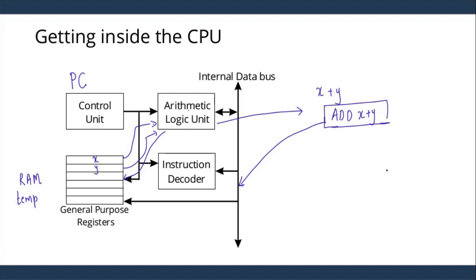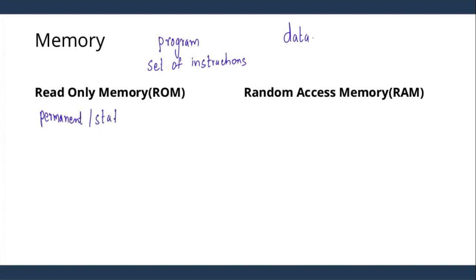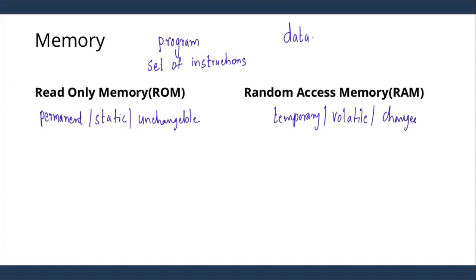When we look at the instruction in more detail in a microcontroller CPU — memory is required for two purposes: for storing the program, which is a set of instructions, and then data. These are the two kinds of requirements for memory. We have read-only memory and random access memory. Read-only memory is used for permanent or static, unchangeable data, while random access memory is used for temporary, volatile, or changeable data.